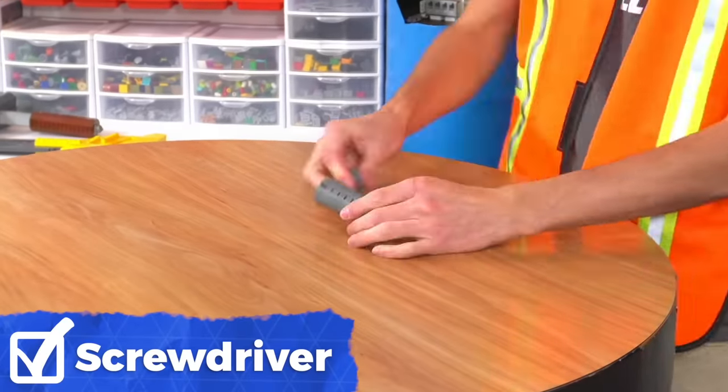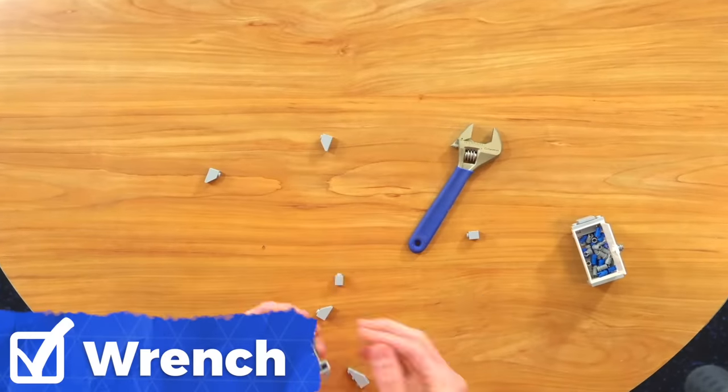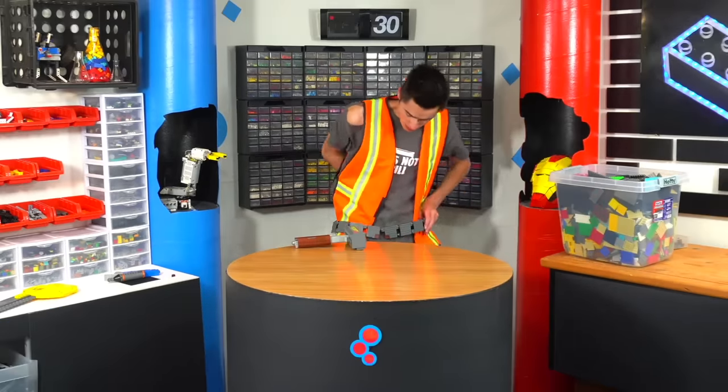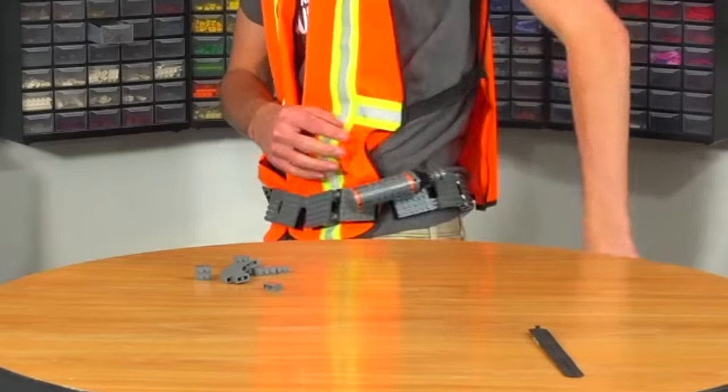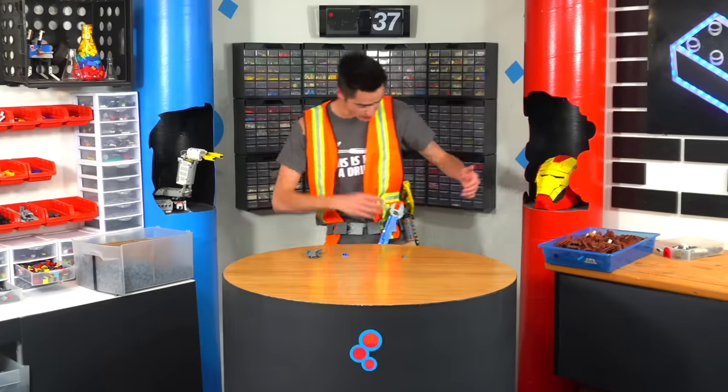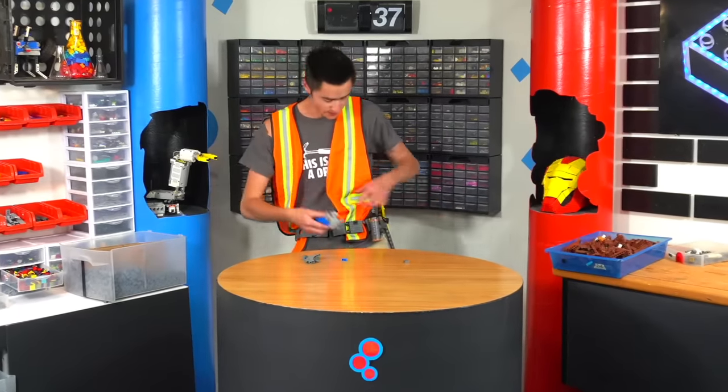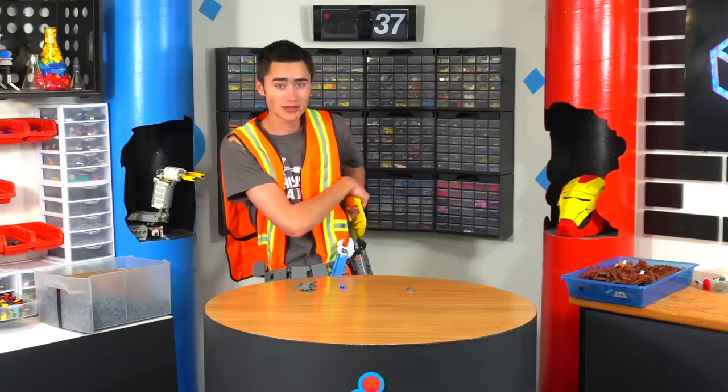All right, so here we have our tool belt. As you can see, everything is accessible. It's actually pretty legit. We've got a hammer and then we've got our saw if we need to use that. It comes out.